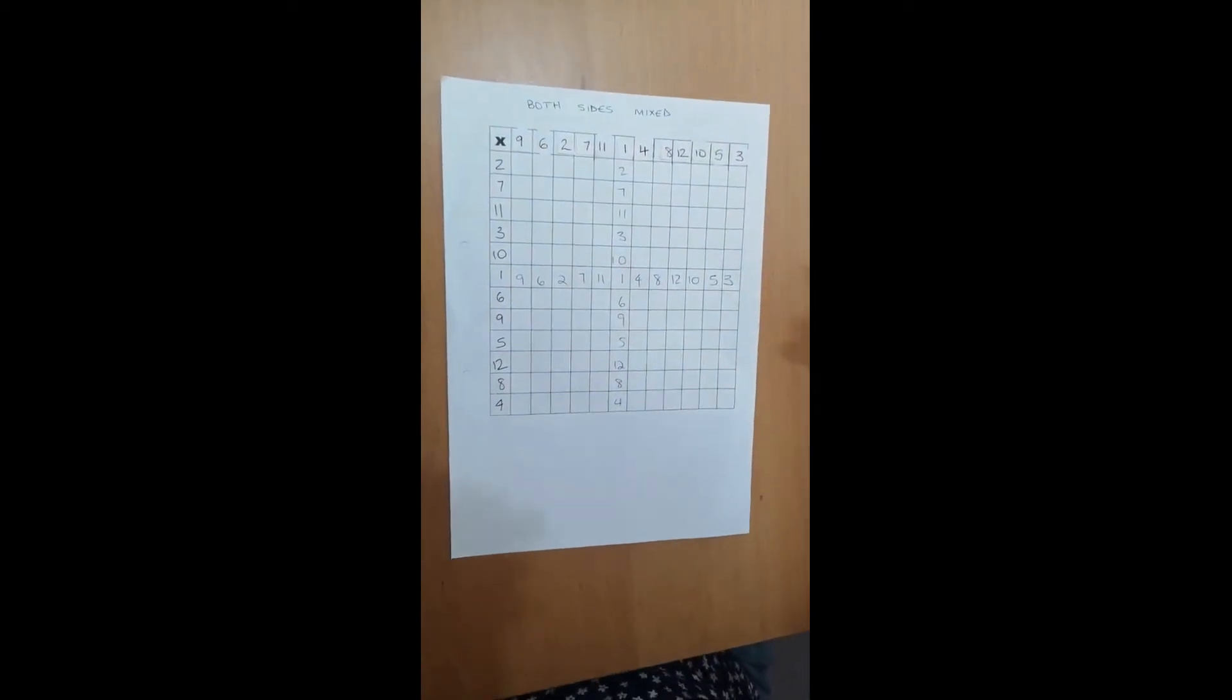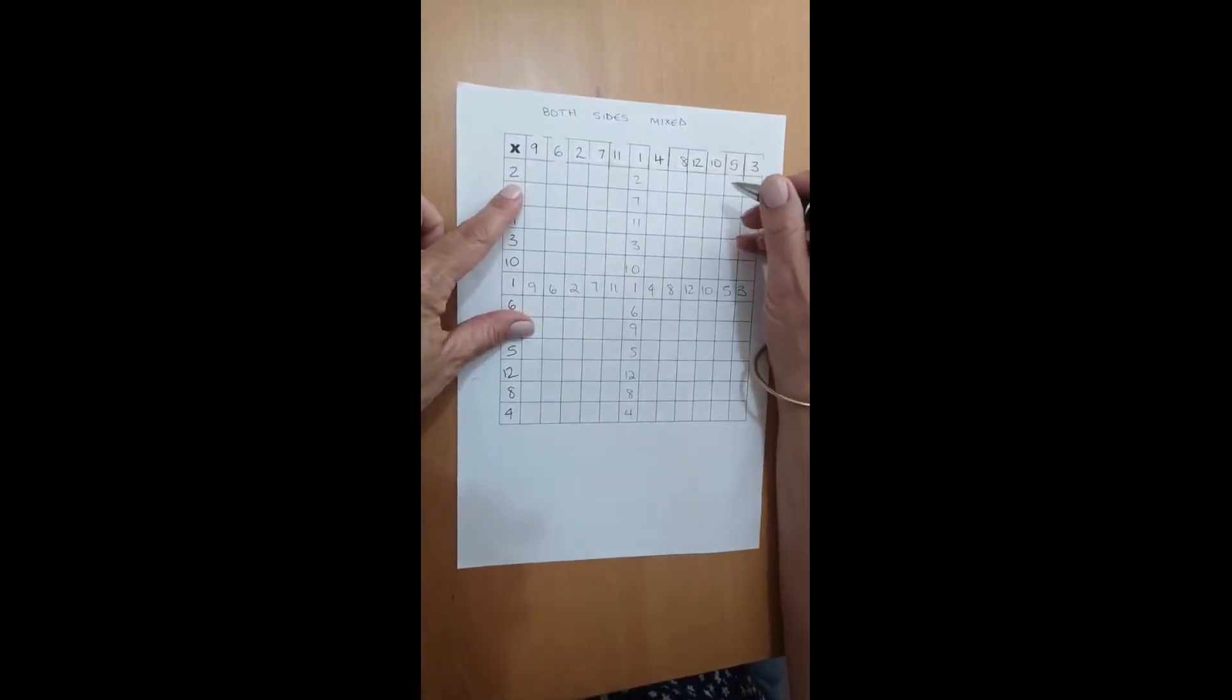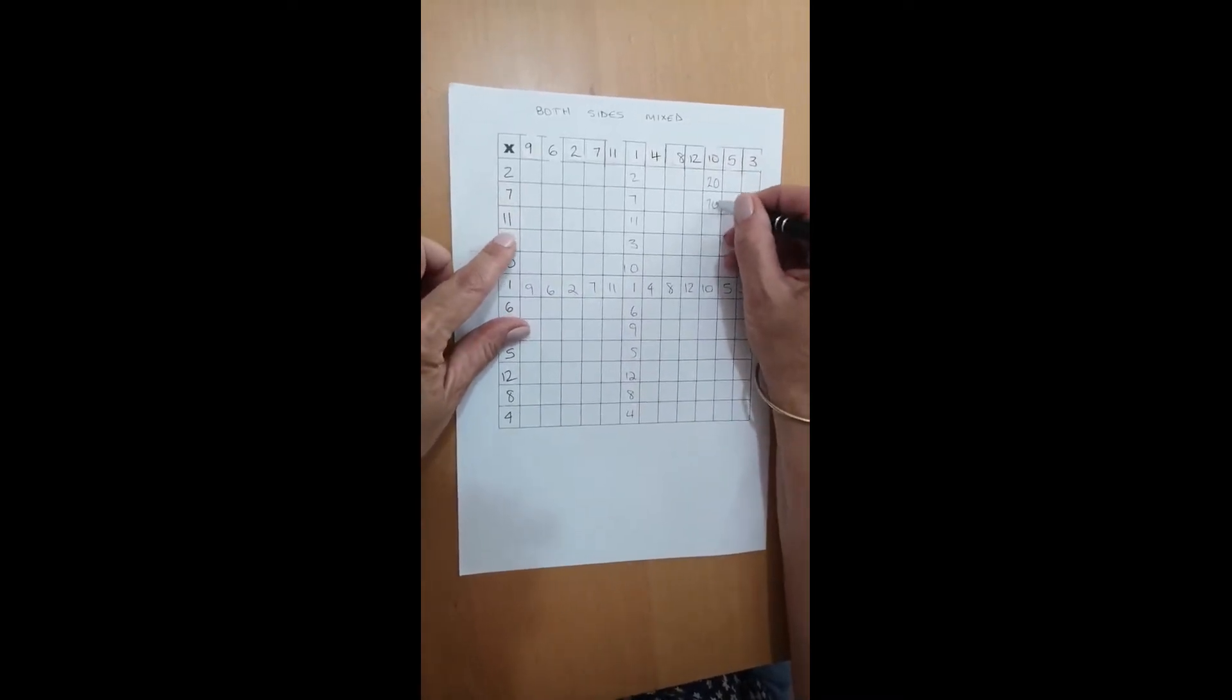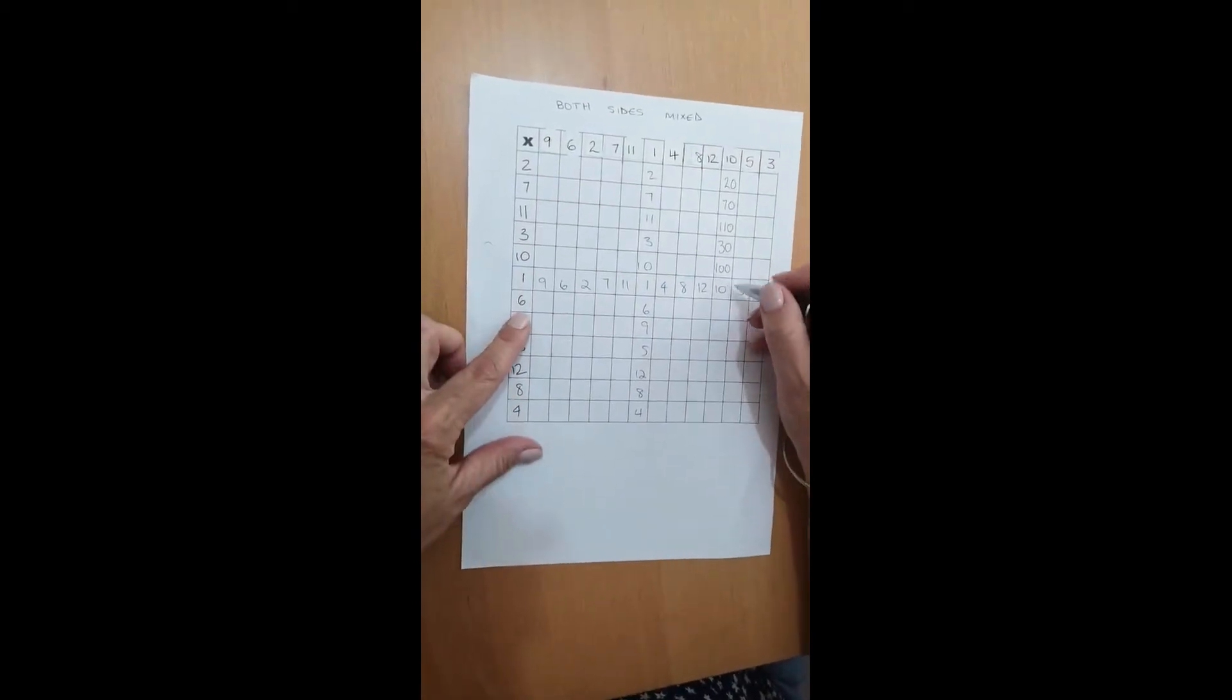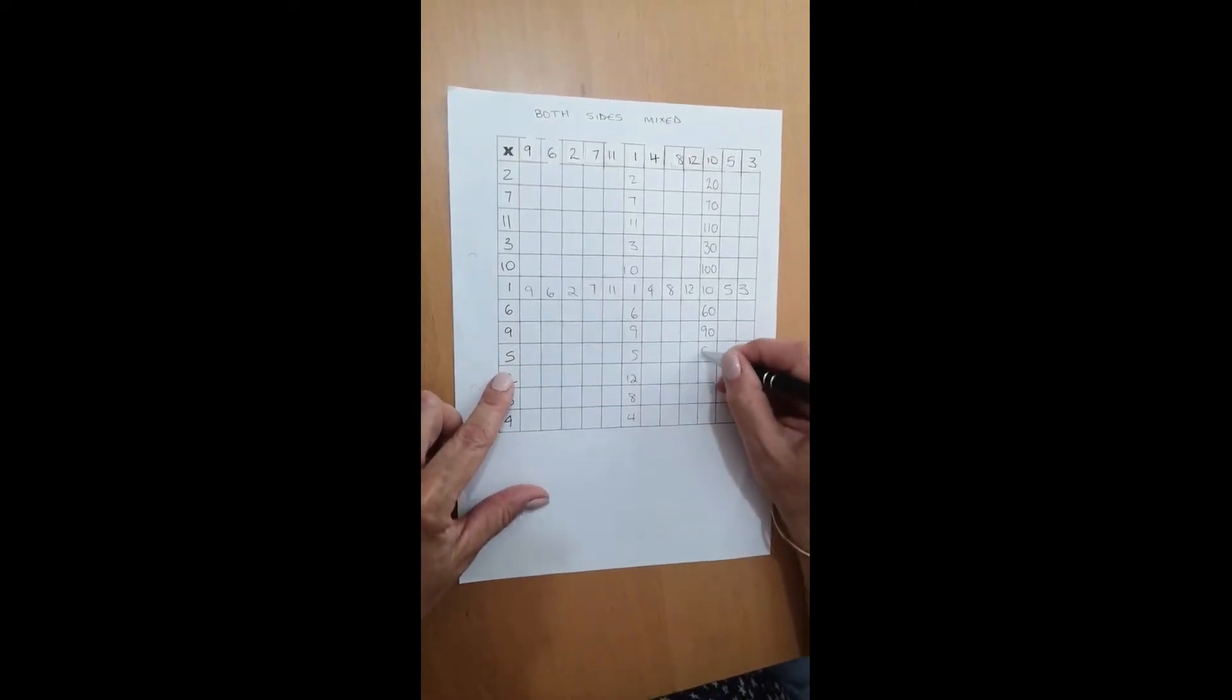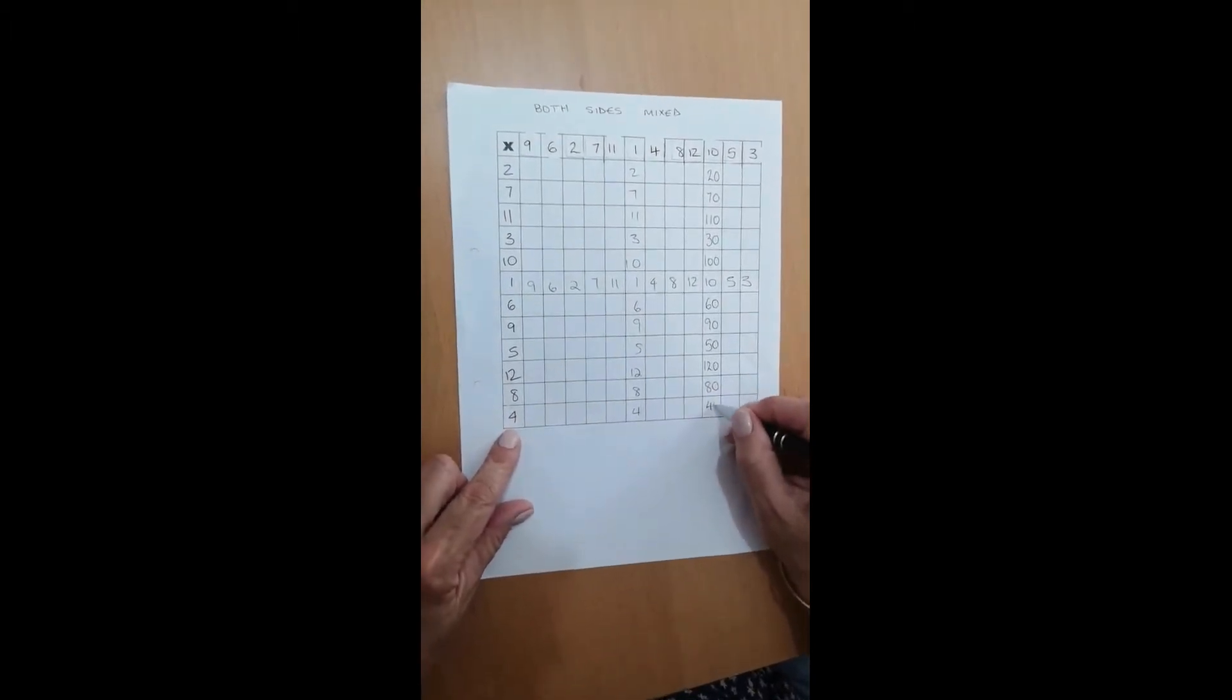And again, as I did with the others, I'm going to do the 10 times table next being careful to look at the numbers along the side. So 10, 20, 70, 110, 30, 100, 10's already done, 60, 90, 50, 120, 80, 40.